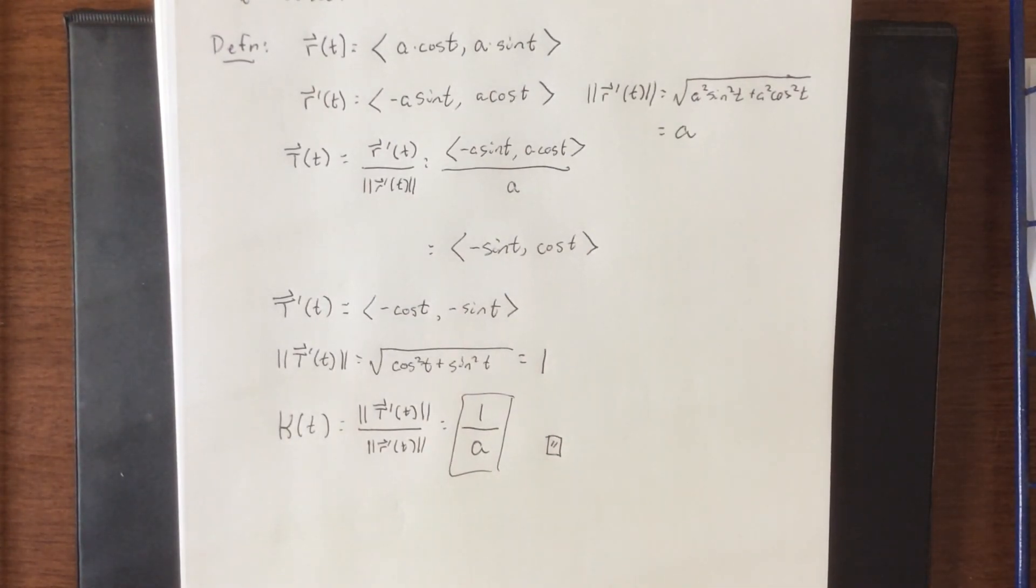It also brings in the concept of not exactly a tangent circle, but a circle that intersects at the same point with the same curvature. It's referred to as an osculating circle. We're not going to study that too much this semester though.